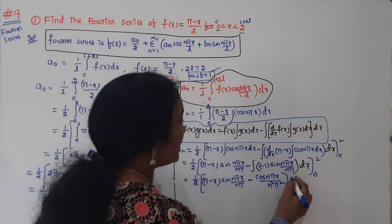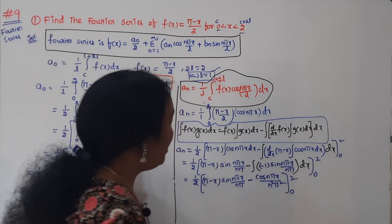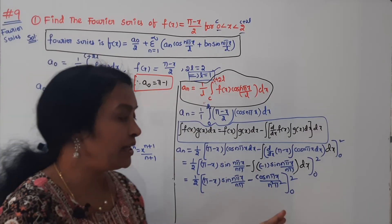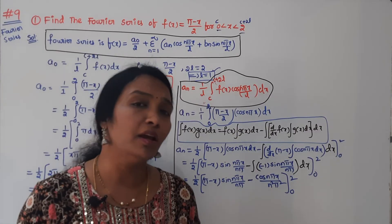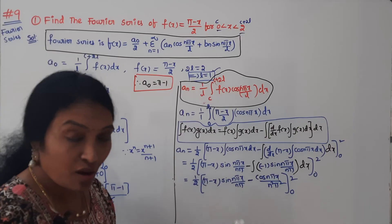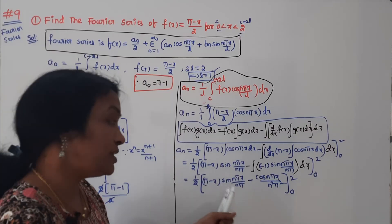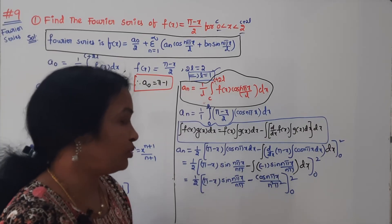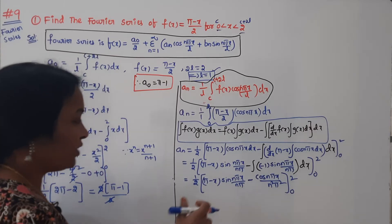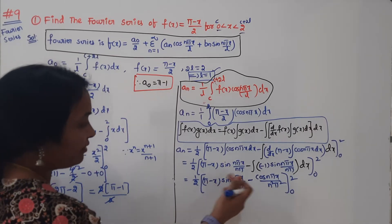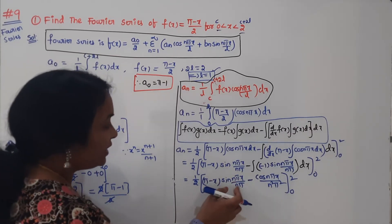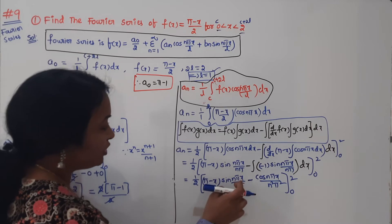Before applying limits, note that sin(nπ) is always 0, so the sin terms vanish. At x = 2: sin(2nπ) = 0, and at x = 0: the sin term is also 0. Those terms vanish completely.